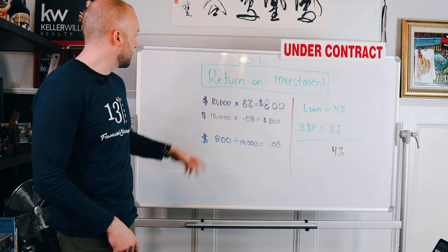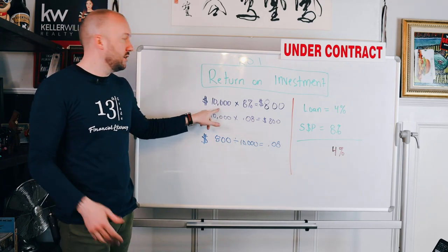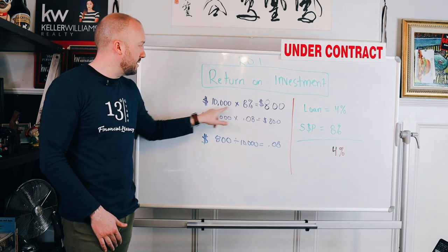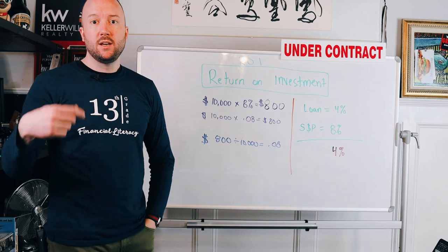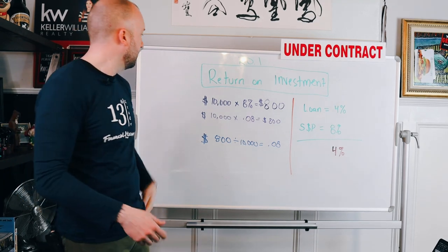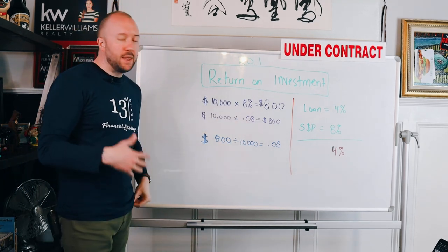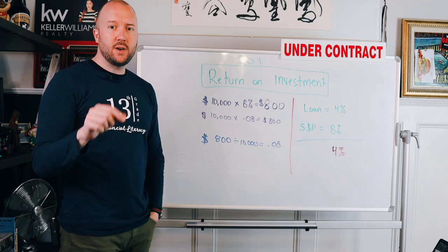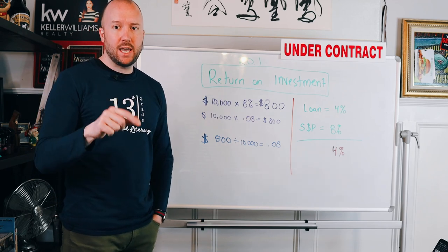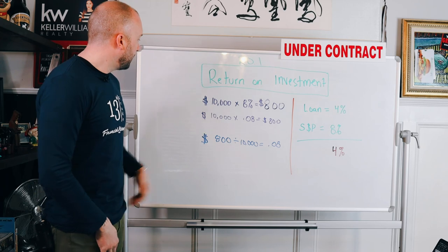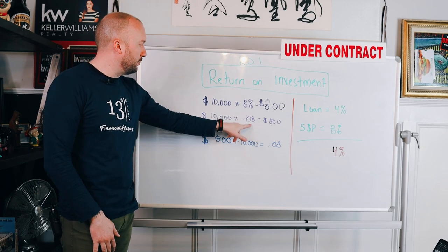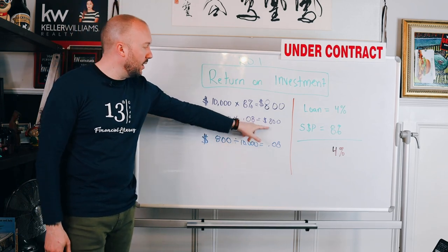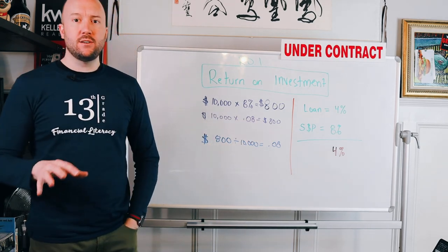A little bit about compounded interest: that means the next year you would take $10,800 times 8%, because you now have the interest added, and you'd get an additional amount — actually a little bit more than $800. And that's going to start to build. If you put that into a calculator, you can do 10,000 times 8 and hit the percent sign and you'll get the $800. You can also do it by 0.08, which is the exact same thing. So 10,000 times 0.08 equals $800 — and that's how you do that calculation.